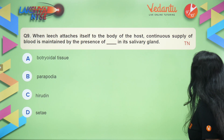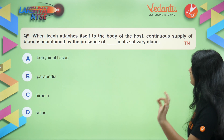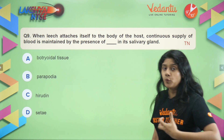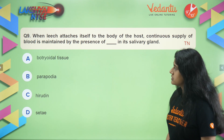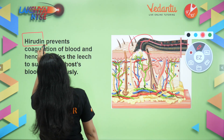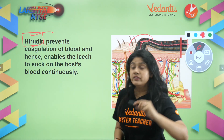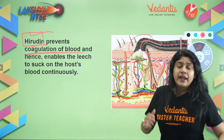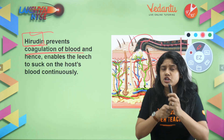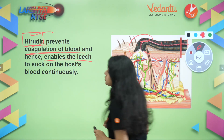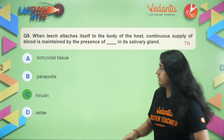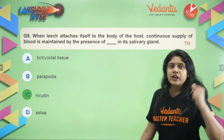Question nine: when a leech attaches itself to the body of a host, a continuous supply of blood is maintained by the presence of a substance in its salivary glands. Remember the name hirudin — this chemical is present in leech salivary glands and it prevents the coagulation of the host's blood, so no clot forms. This enables the leech to take blood continuously without any break. The answer is hirudin.